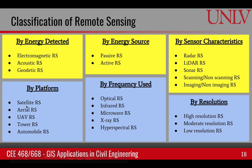Based upon the previous discussion, we can classify remote sensing in many ways. We can classify based upon the energy it detects — for example, electromagnetic energy, acoustic energy, or gravitational field. We can also classify based on the source of energy: passive or active. Or the type of sensor characteristics — for example, radar, lidar, sonar, scanning or non-scanning, and imaging versus non-imaging remote sensing.